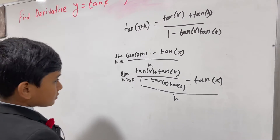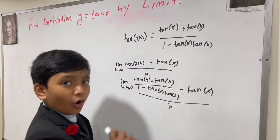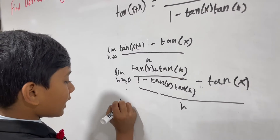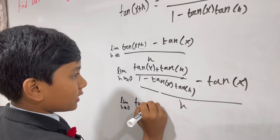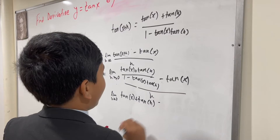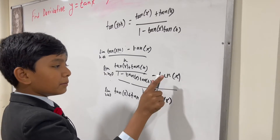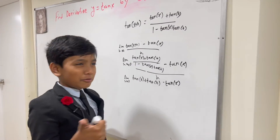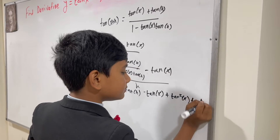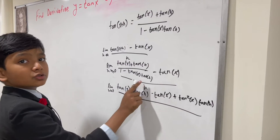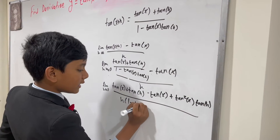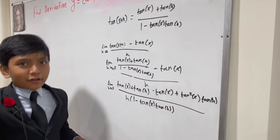So, now we're going to multiply this by (1 minus tan x tan h) over (1 minus tan x tan h), to create a common denominator. That gives us tan of x plus tan of h, and when we multiply, we get minus tan of x, and then minus minus gives us plus tan squared x, times tan h. That's divided by the combined denominator: h times (1 minus tan x tan h).